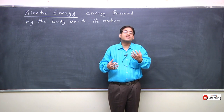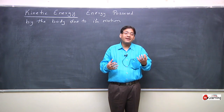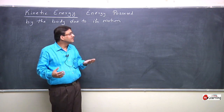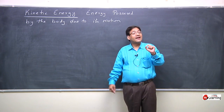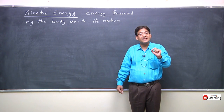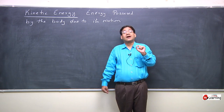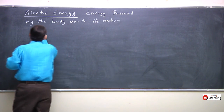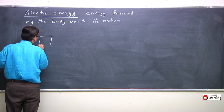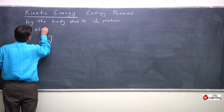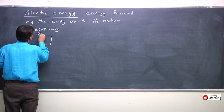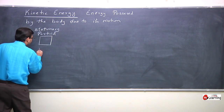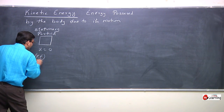It possesses energy due to motion and we call it kinetic energy, while a sleeping man — who has no motion — we say has no energy or less energy. I want to first conceptualize kinetic energy and obtain its expression. For this I will take a stationary particle. If a particle is stationary, its velocity is zero, and its initial kinetic energy is zero.